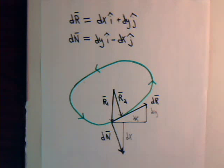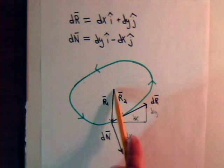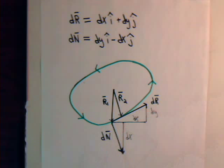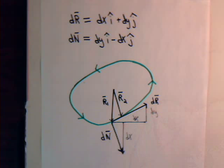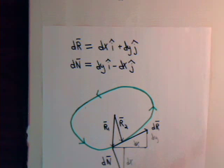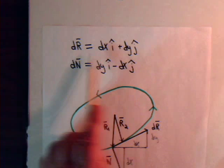Let's say that we are going about a closed curve. Here is a position vector r1 and r2 — pretend they're very close together, so that going from r1 to r2 there's a differential dr, which we have greatly amplified. The differential position vector dr will have a dx and a dy component.